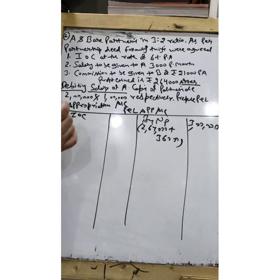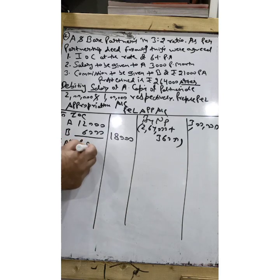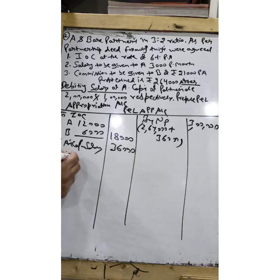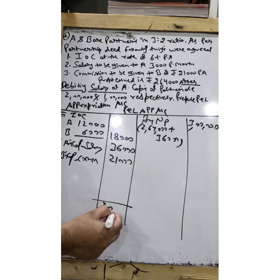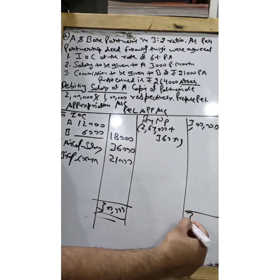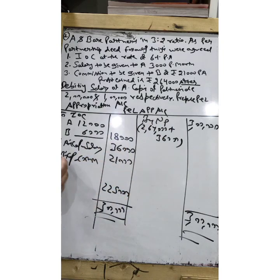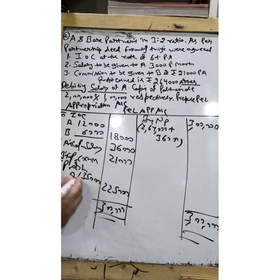So net profit is ₹3,00,000. IOC for A: 2 lakh × 6% = ₹12,000; for B: 1 lakh × 6% = ₹6,000. Salary to A's capital: ₹36,000. Commission to B's capital: ₹21,000. Total deductions ₹75,000. Remaining profit: ₹3,00,000 − ₹75,000 = ₹2,25,000. Distribute among A and B in 3:2 ratio — ₹1,35,000 to A and ₹90,000 to B.